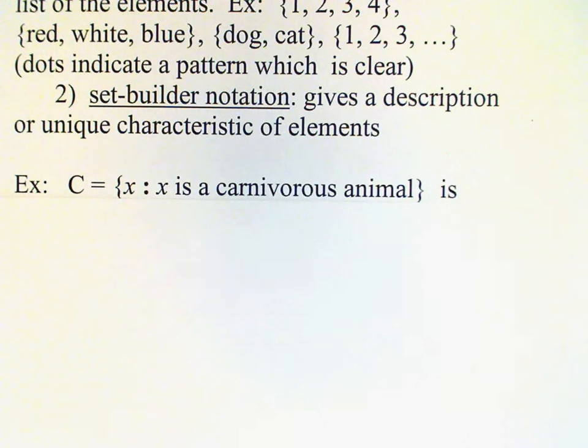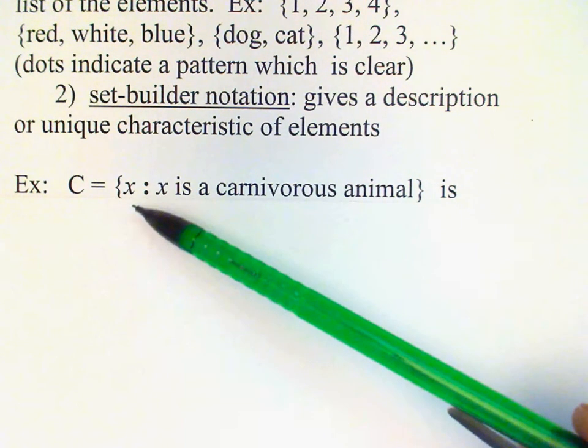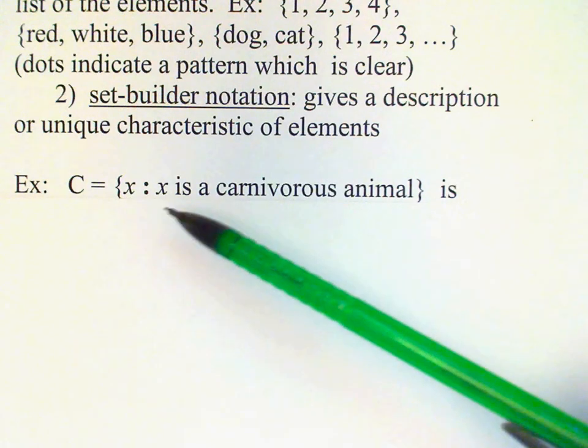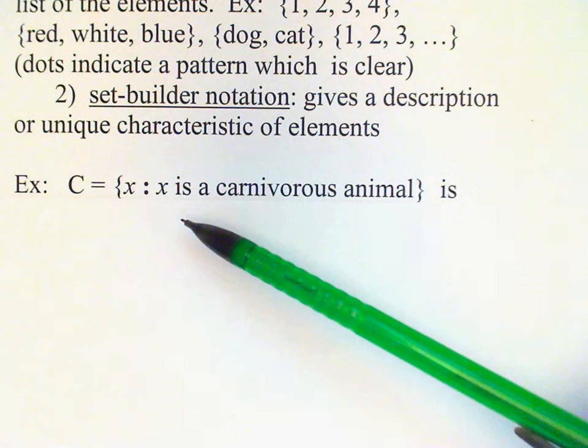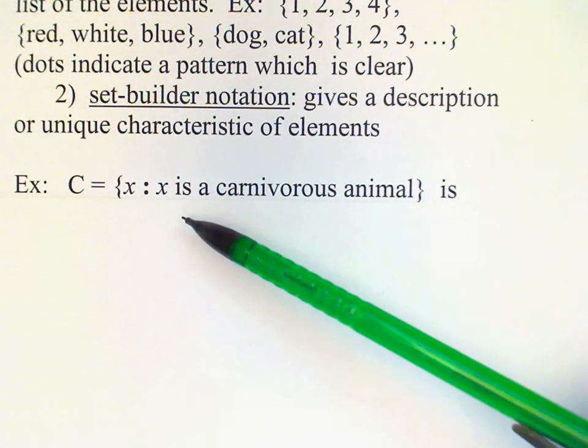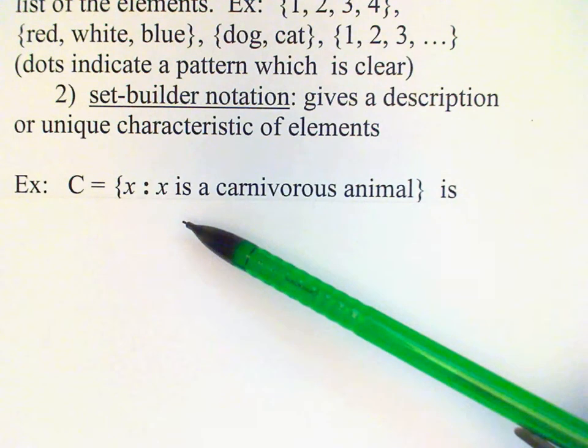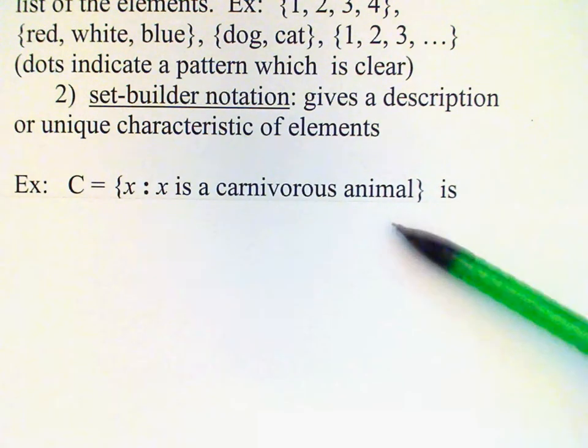Now, we might not know every carnivorous animal out there. Nevertheless, we can still specify the set using set builder notation in this way. We give typical element, x for example, and then give that characteristic of that element, which will determine whether that object is in the set or not. So if the animal is carnivorous, we know it's in the set.